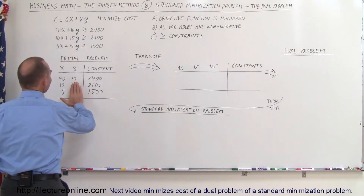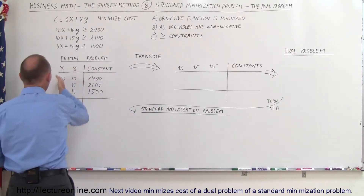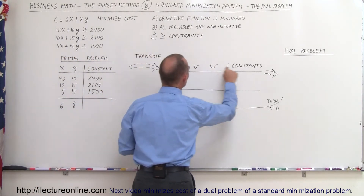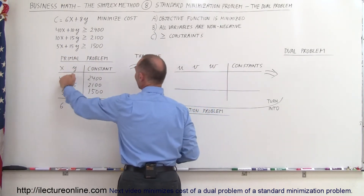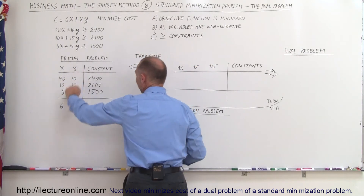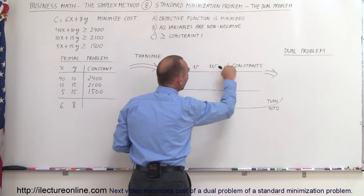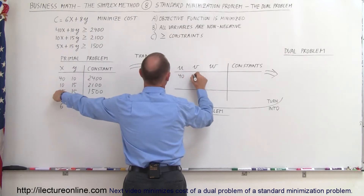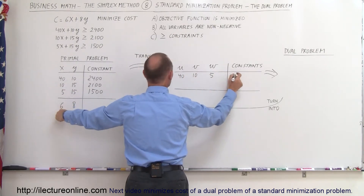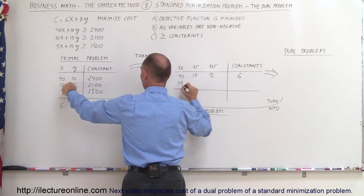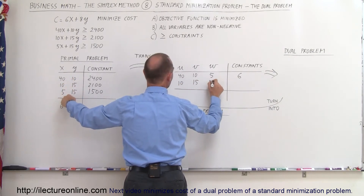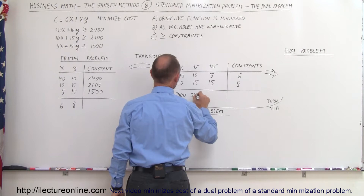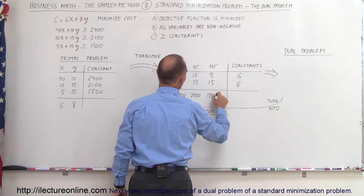What we're going to do is take this and transpose it so the columns become rows. Instead of having these columns we now have rows, and we have three new variables. Notice that for each inequality we're going to need a variable — if we had four inequalities we would need four variables. So here we have 40, 10, 5, and the constant 6. Here we have 10, 15, 15, and 8. And here we have 2400, 2100, 1500, and nothing here.